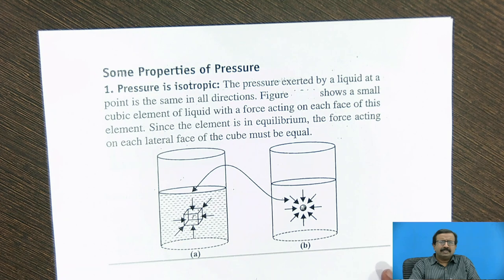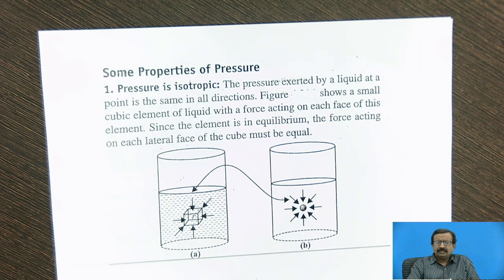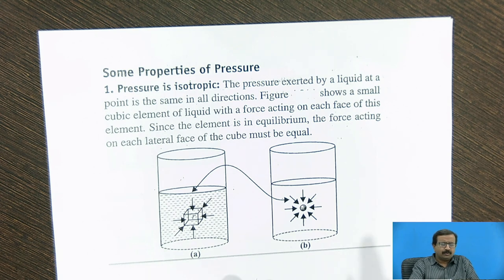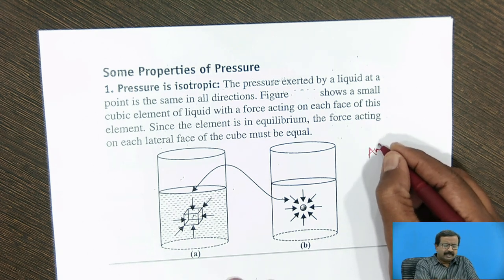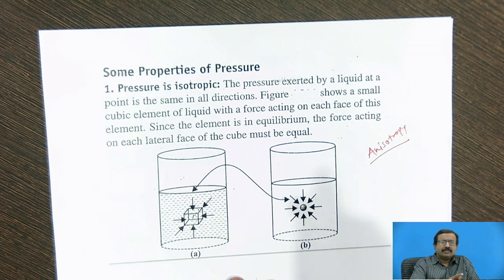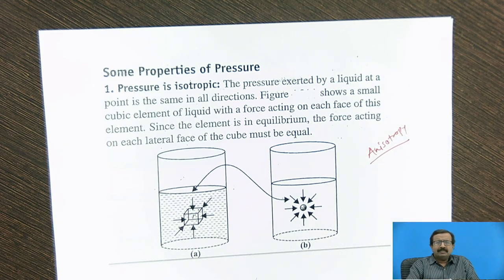Now, first important property is pressure is isotropic. Now, first of all, there are two terms we use in mechanics. One is called as isotropy and second is called as anisotropy. So isotropic means the quantity is same in all directions.